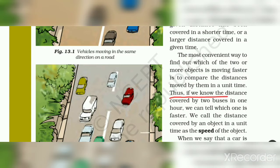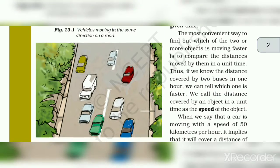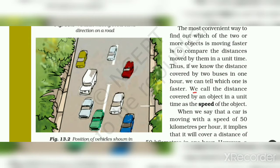Thus, if we know the distance covered by two buses in one hour, we can tell which one is faster. The distance covered by an object in a unit time is called the speed of the object.